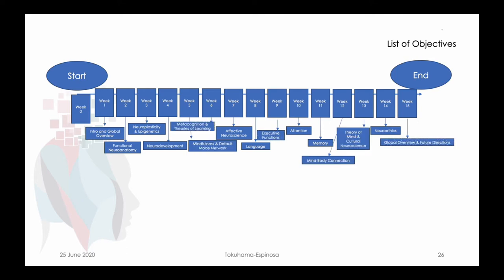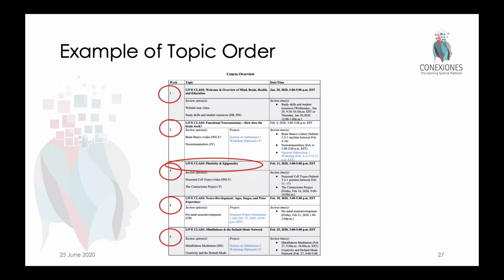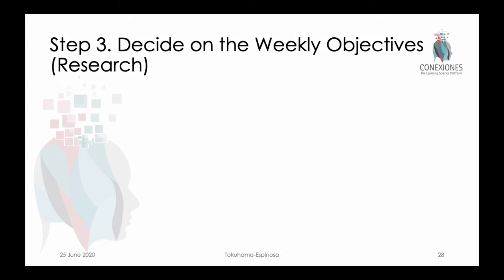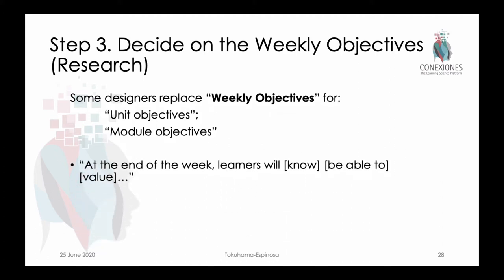In our syllabus, we list by week the name of the topic — we have each week listed out, 1 through 15 — and then indicate what the main topic will be. Additionally, we also indicate some of the other section topics we'll go into in much deeper detail. In order to decide those weekly objectives — some people call them unit or module objectives — we have to do a bit of research. The structure is the same as the global objectives: at the end of each week, learners will know, be able to do, or value.